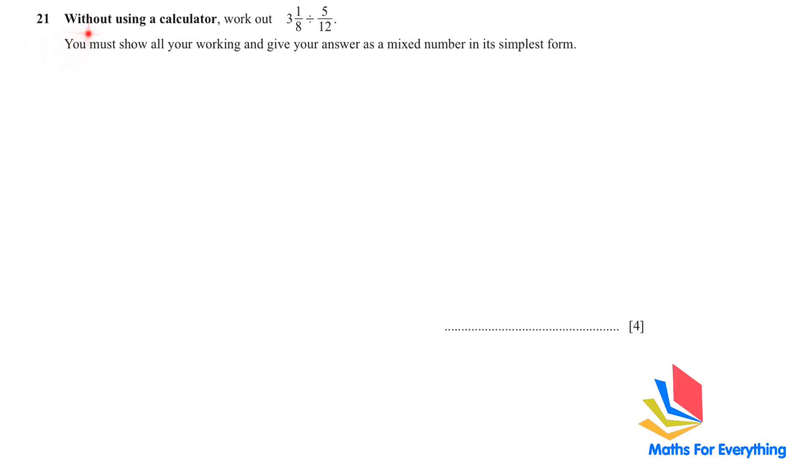Question 21: Without using a calculator, work out 3 1/8 divided by 5/12. You will show all your working and give your answer as a mixed number in its simplest form. It's a four mark question, very easy and quite often repeated. To change the mixed number into improper fraction, we multiply the denominator with the number on the side and add to the numerator. So 8 multiplied by 3 is 24 plus 1, 25. The denominator stays the same.